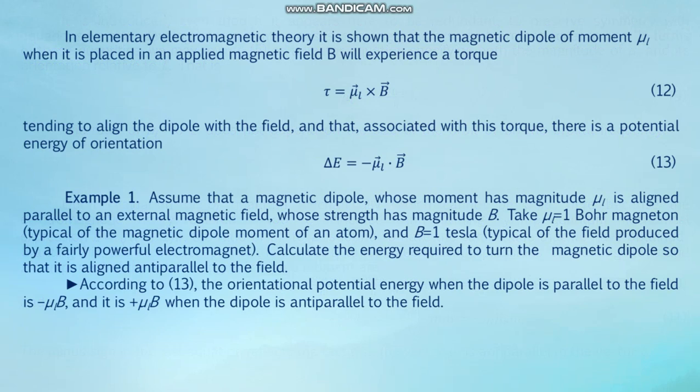In elementary electromagnetic theory, it is shown that the magnetic dipole moment μ_L, when placed in an applied magnetic field B, will experience a torque τ = μ_L × B tending to align the dipole with the field, and that associated with this torque there is a potential energy of orientation: ΔE = −μ_L · B, formula 13.